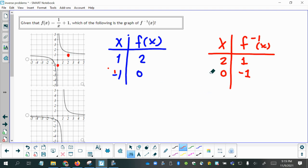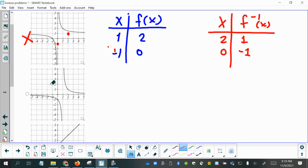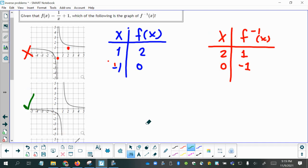So this must not be the answer, which leaves option b as our, most, has to be the answer. But let's just double check, let's verify that we have two points. These two points are going to fall on this graph.